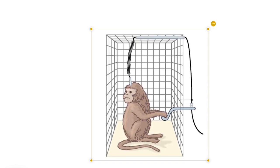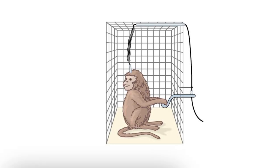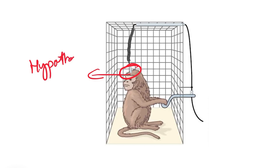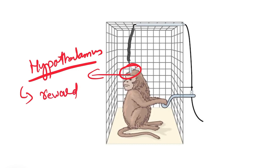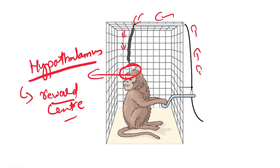Let us discuss how the experimental setup is done to determine the reward and punishment center. You can see a monkey with a lever in hand. Whenever the monkey presses the lever, it stimulates a particular area in the brain via electrodes placed in the hypothalamus. If the electrodes are placed in the reward center — the lateral and ventromedial nucleus of the hypothalamus — the animal presses the lever, the electrical signal stimulates the reward center, and the animal feels a sense of wellness or pleasure.